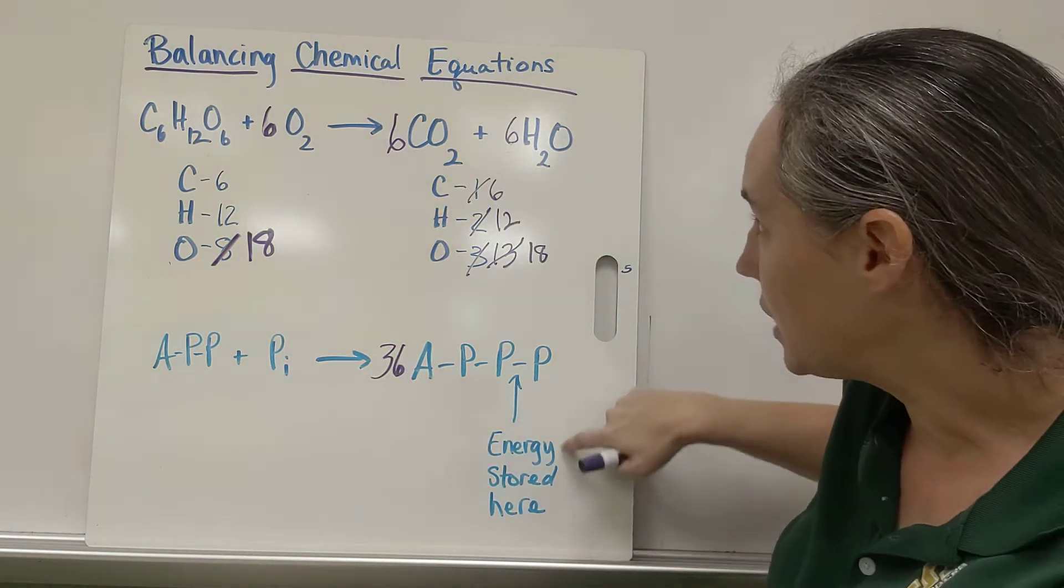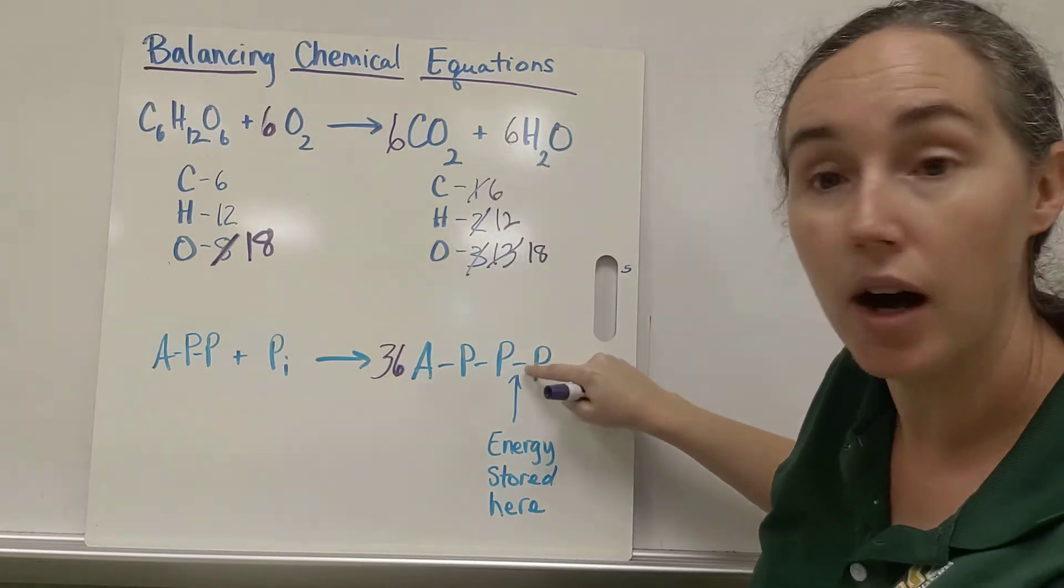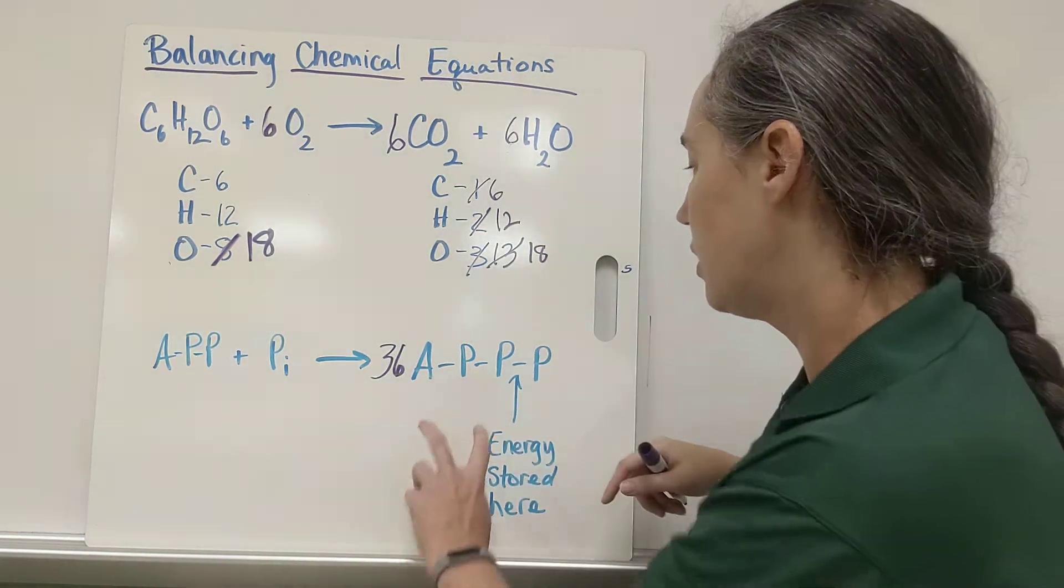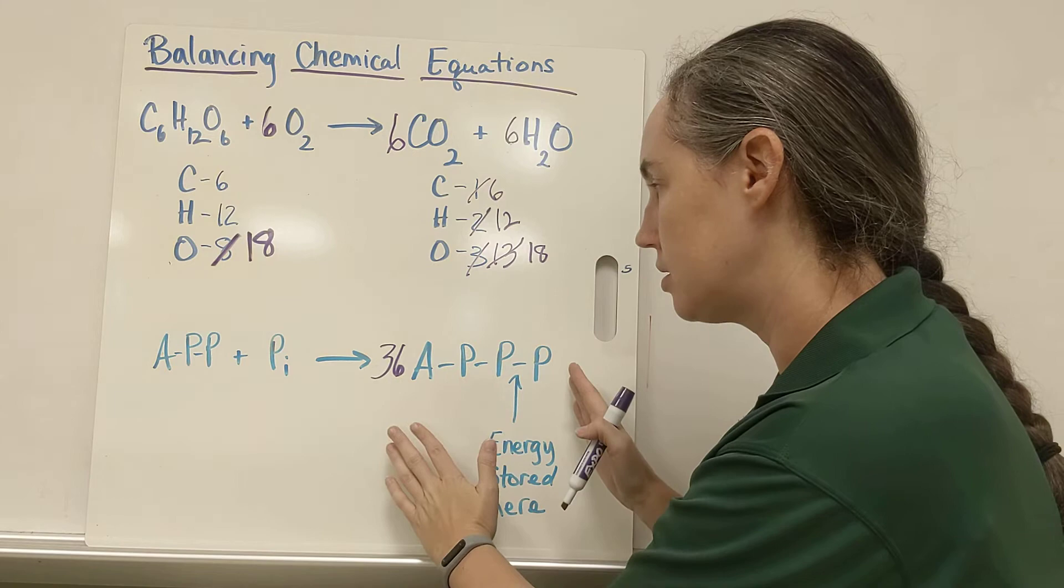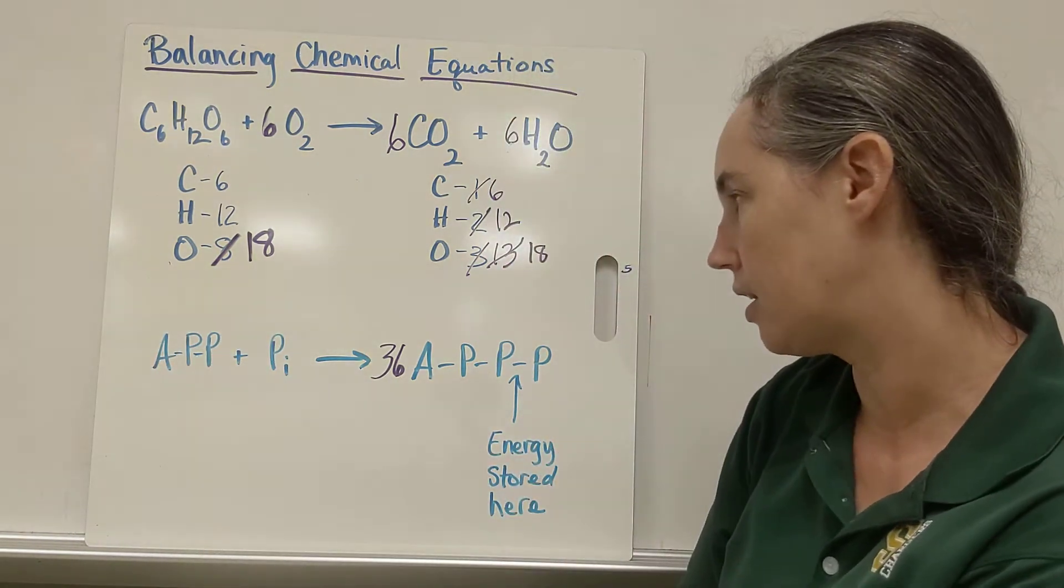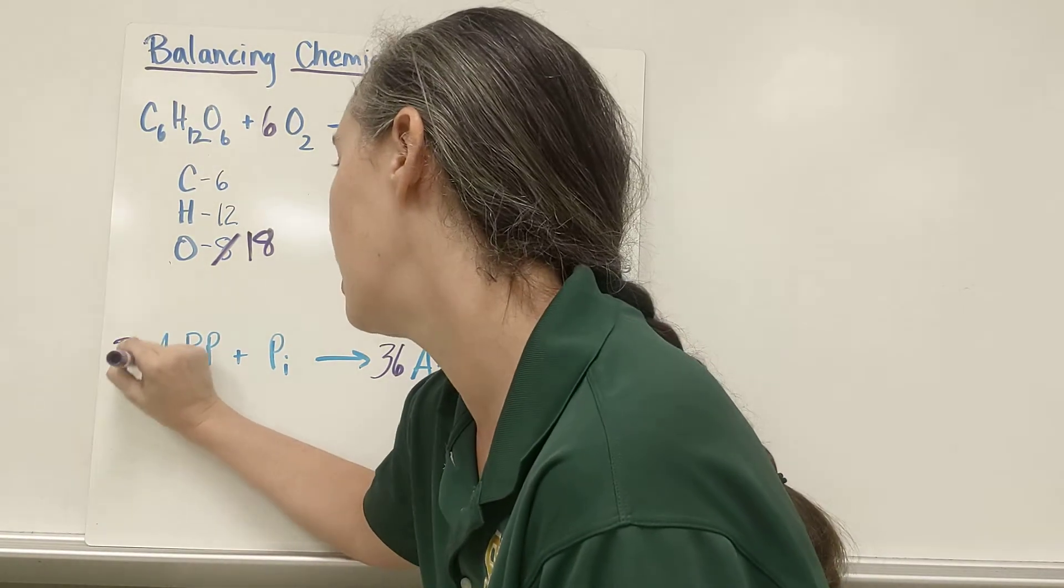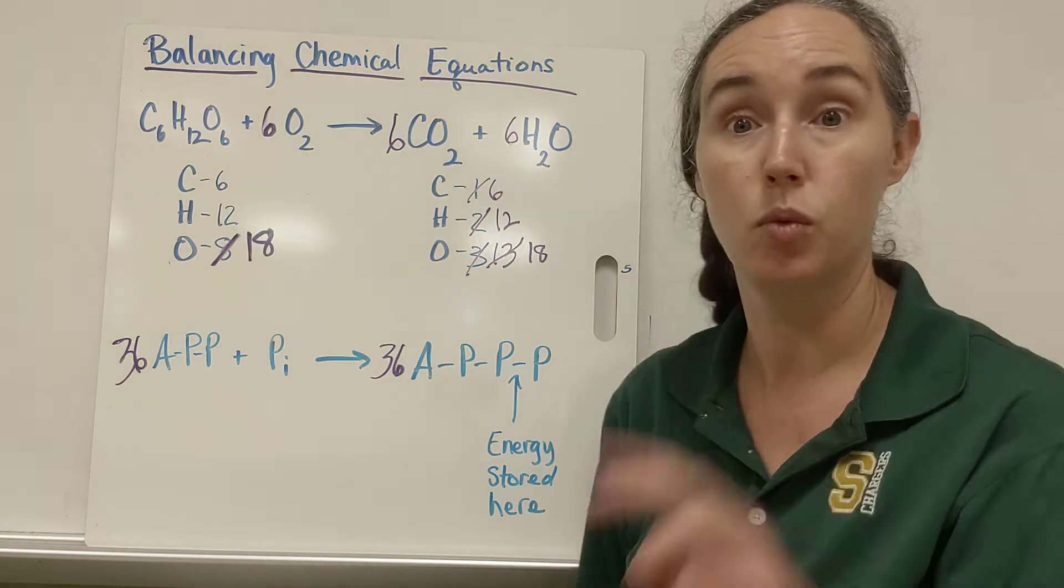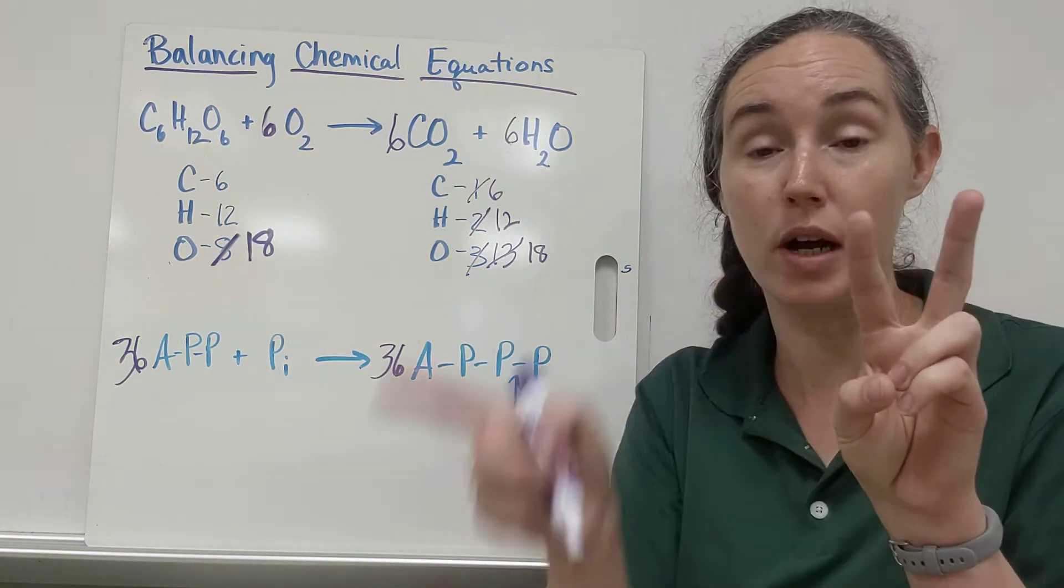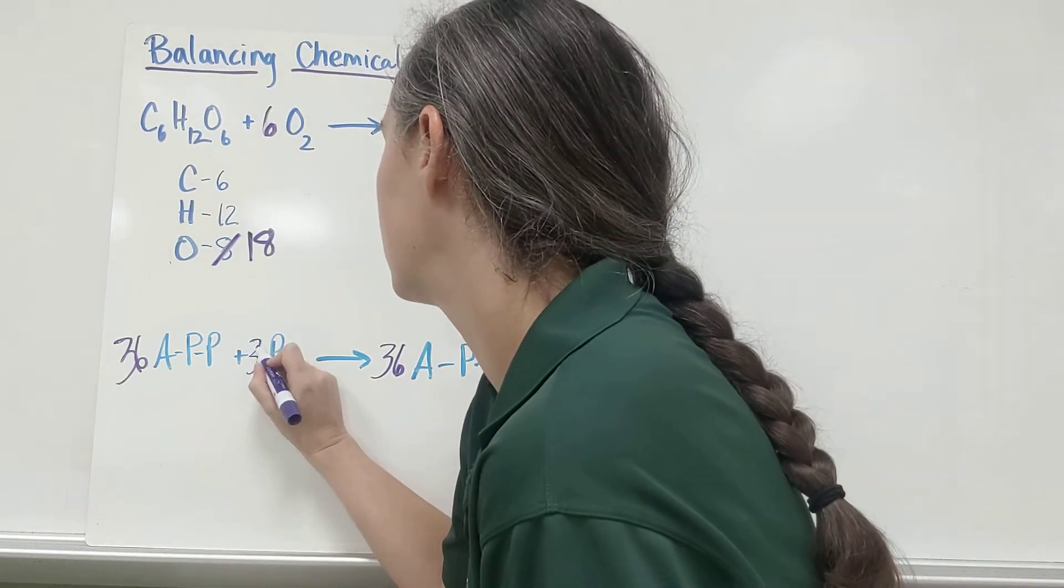So if I have 36 ATPs over here, and remember the energy is being stored, it's being released here and it's being stored in this bond between the last two phosphates. So if I have 36 ATPs, how many ADPs and phosphates do I need? Well, I'm going to need 36 of each. 36 ADPs with two phosphates, and then I'm going to need one extra phosphate to go on all 36 of those, so I'll need 36 here to make 36 ATP.